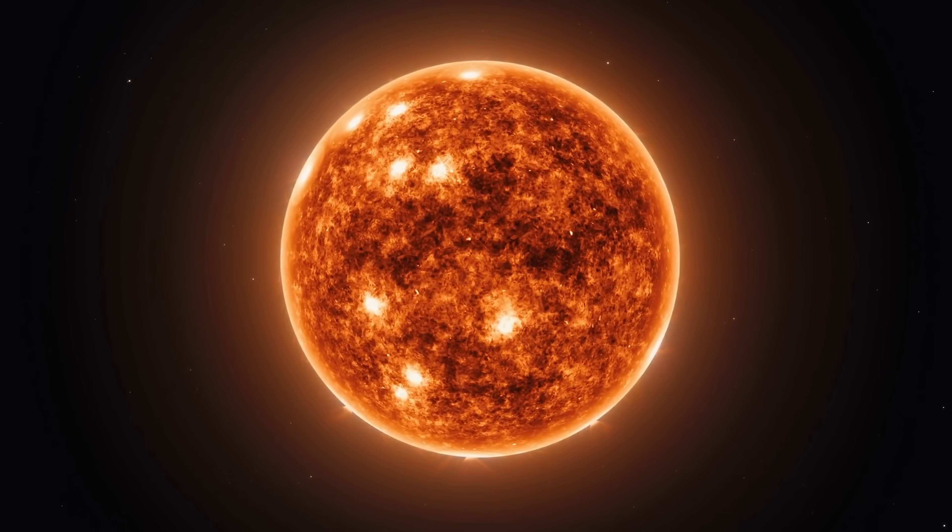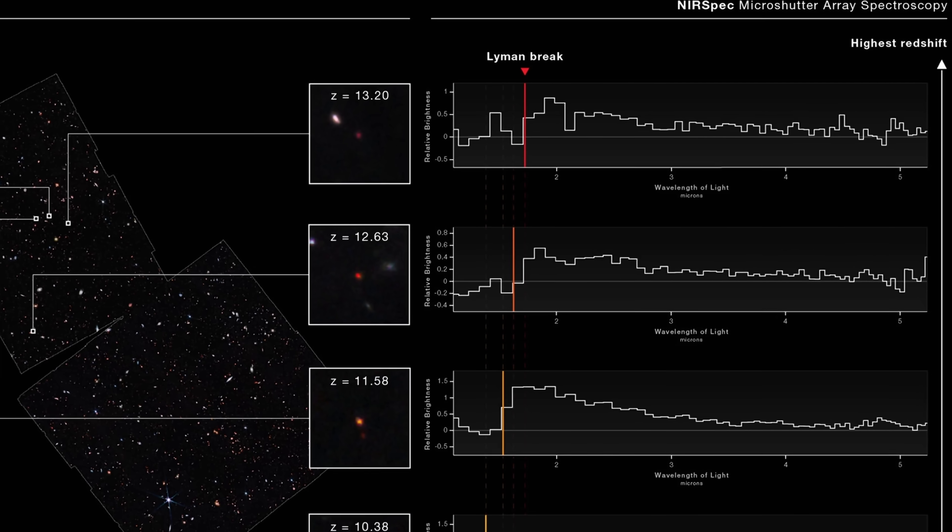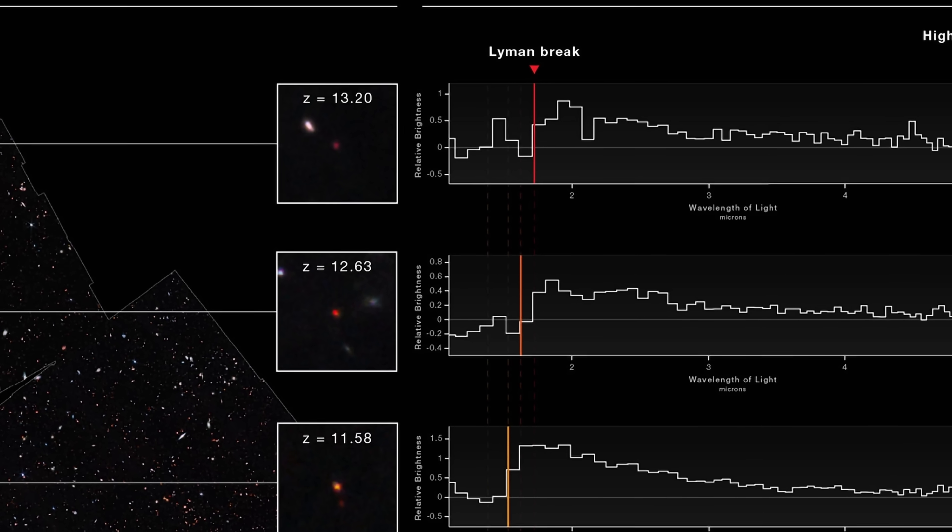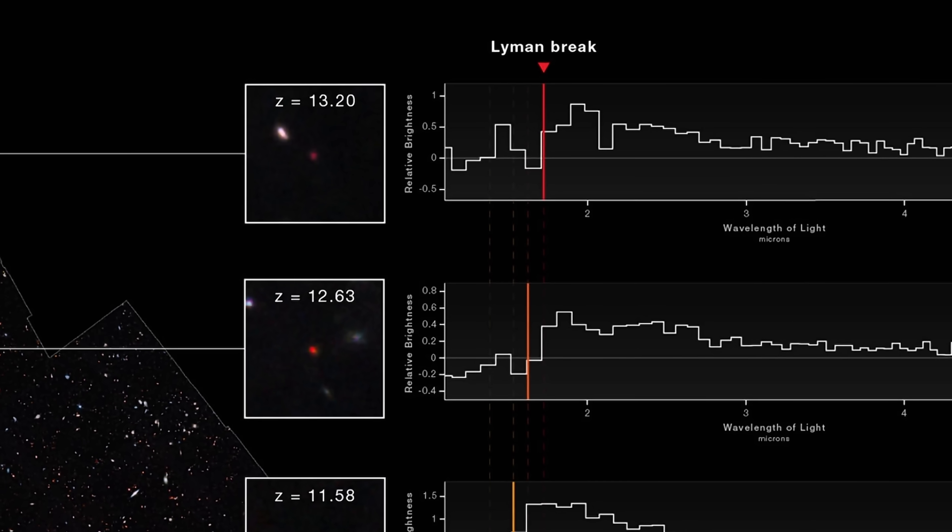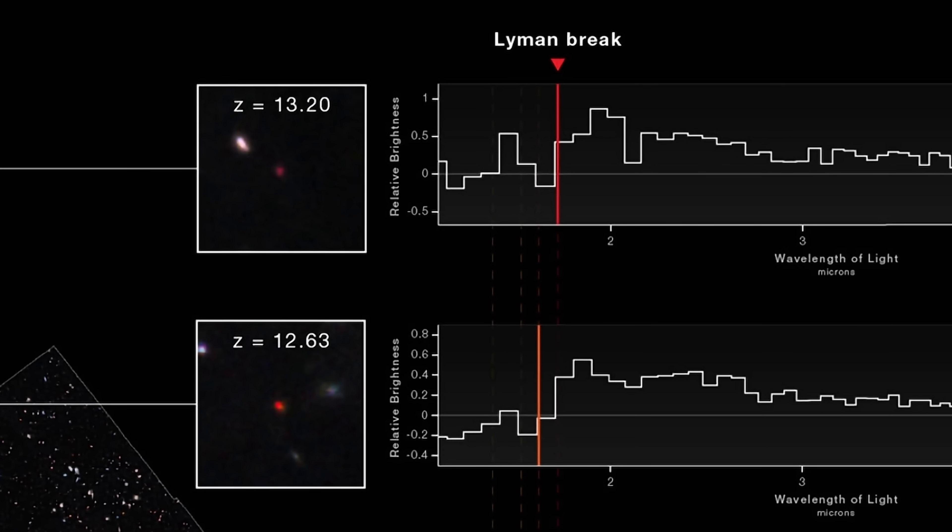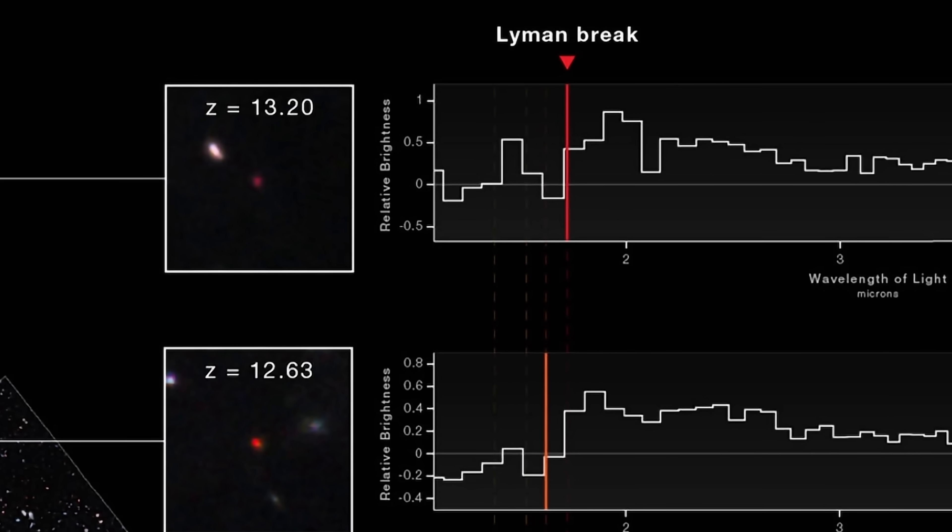First of all when it comes to population 2, population 3 stars, when looking at the absorption spectrum coming from these galaxies it should be similar to other distant galaxies we've discovered so far, including the Lyman break you see right there.